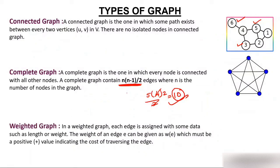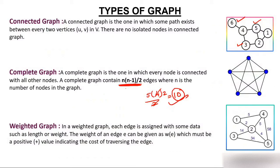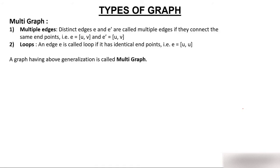A weighted graph is one where a positive value is assigned to each edge. For example, an edge between nodes 1 and 4 might have a weight of 5, representing a cost of $5, and between nodes 1 and 2 a weight of 2, representing $2.